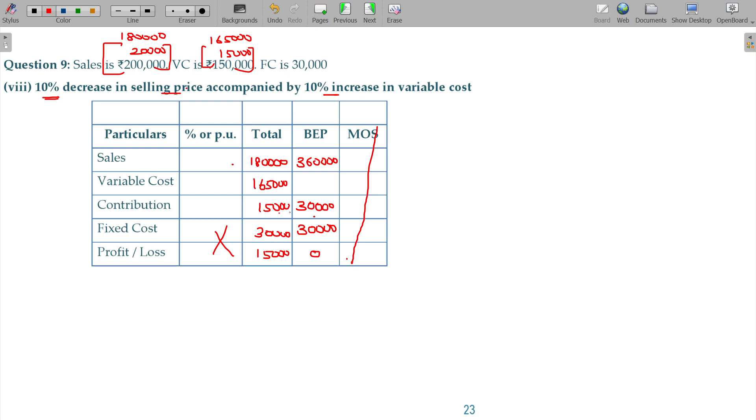Am I right? So, your BEP sales being 3,60,000 rupees. You have not attained your BEP. Still you have to do further sales to reach your BEP.